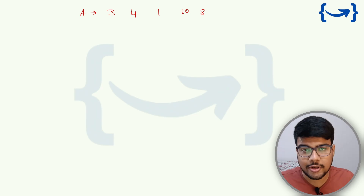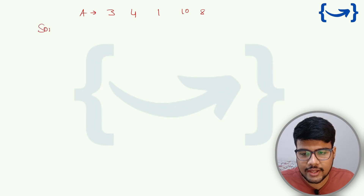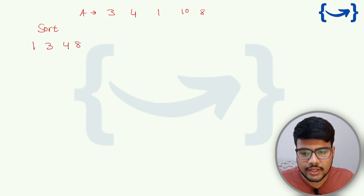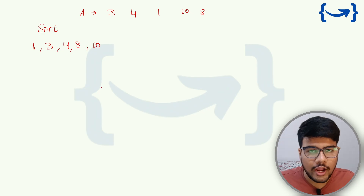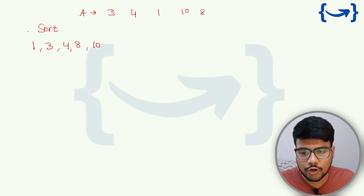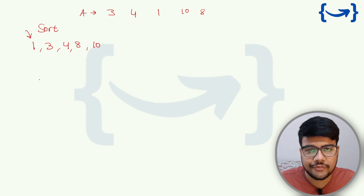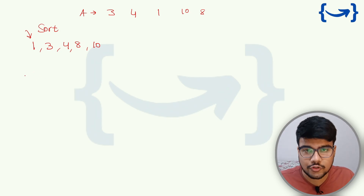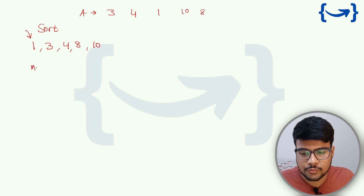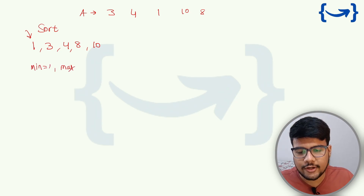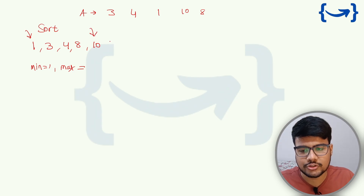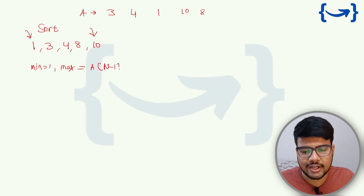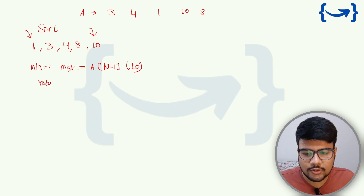You can use multiple approaches here. If you sort the array, you get 1, 3, 4, 8, 10. Now to find the minimum and maximum values, you just fetch the first element — index 0 gives minimum, which is 1 — and the last element, A[N-1], gives the maximum, which is 10. Then you simply return max minus min, which is your answer.